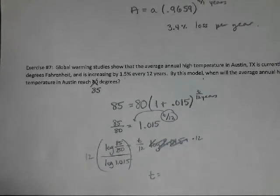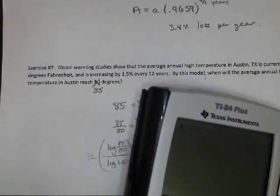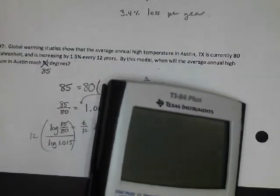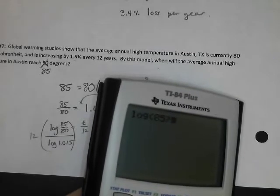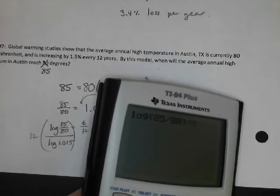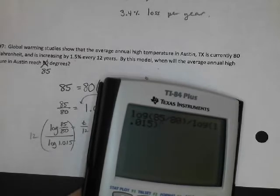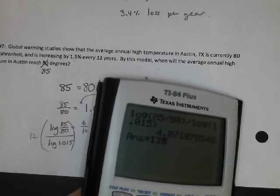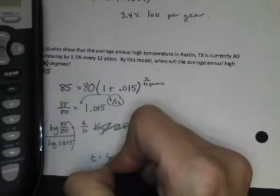So, starting at 80, but global warming is happening, so it'll get to 85 within how many years? I guess it's a long number of years, but in the grand scheme of the age of the planet, it's probably not long at all. So, there's the log divided by the log. Take that, multiply it by 12. Well, this says 49 years, so that's not long at all.